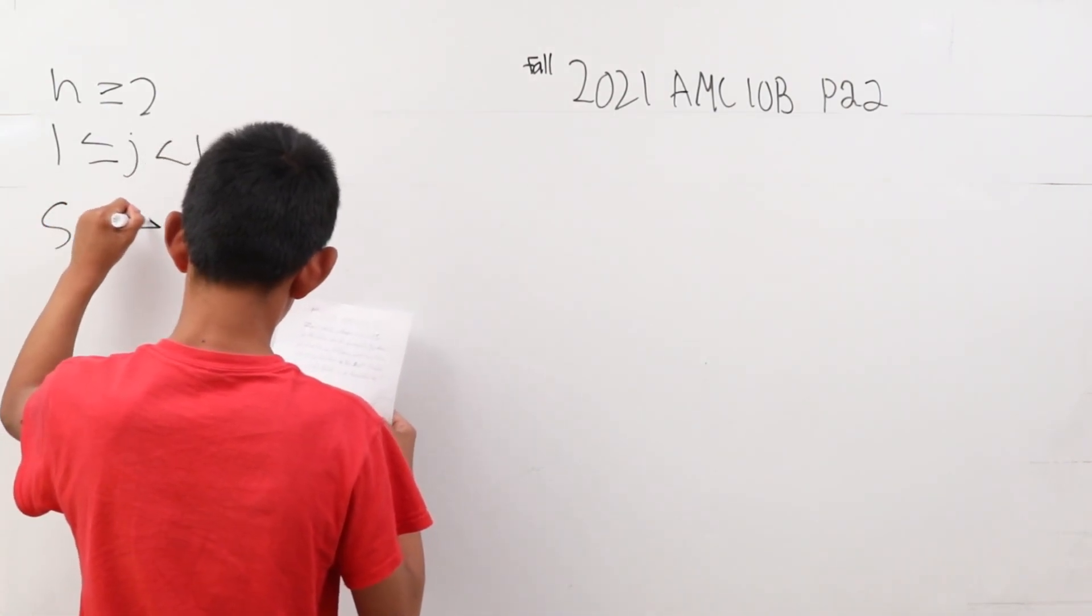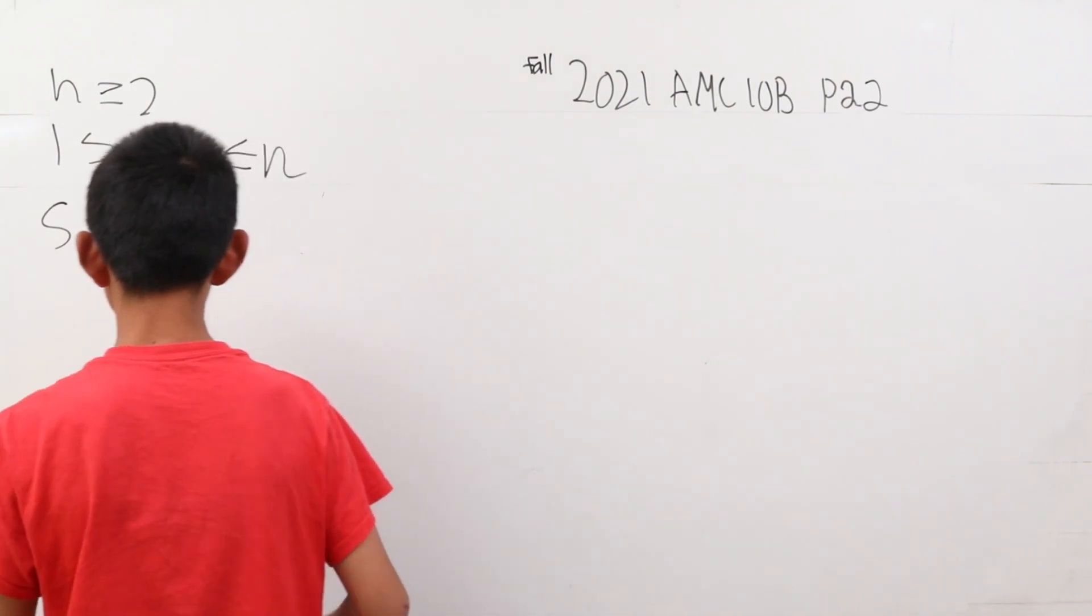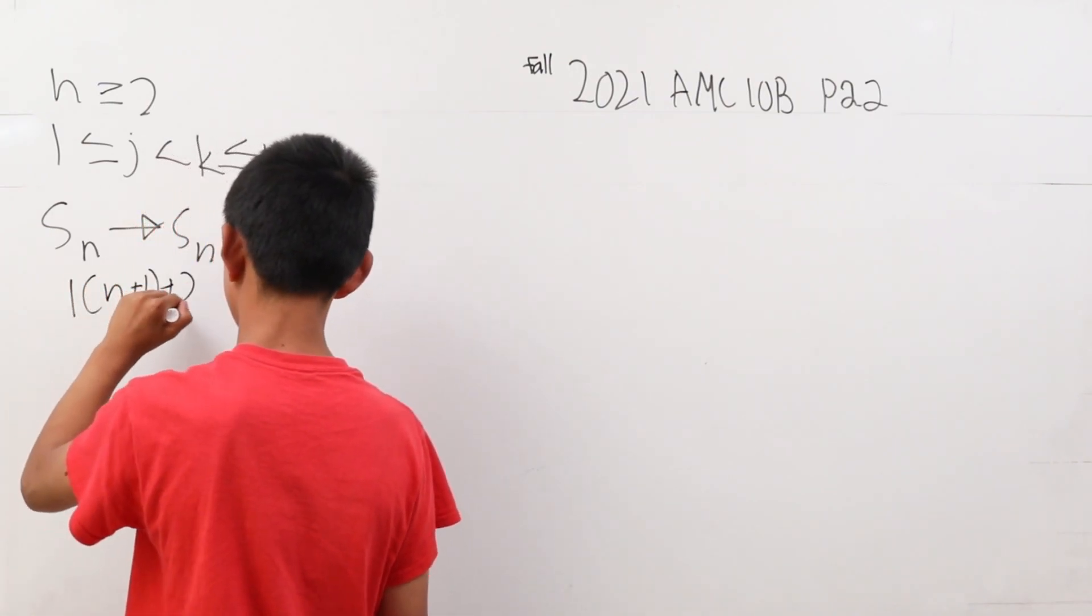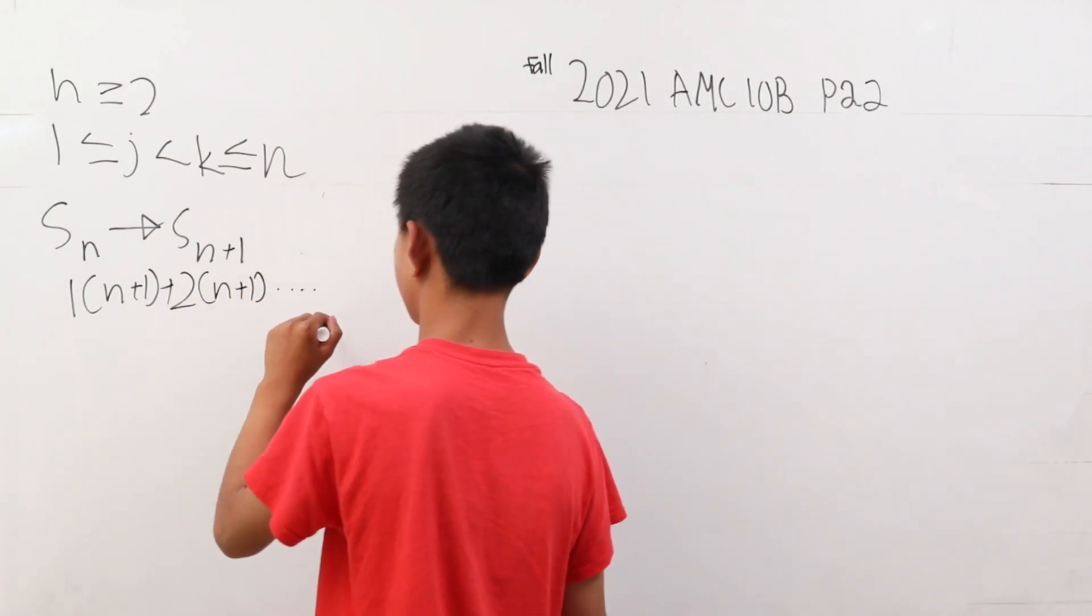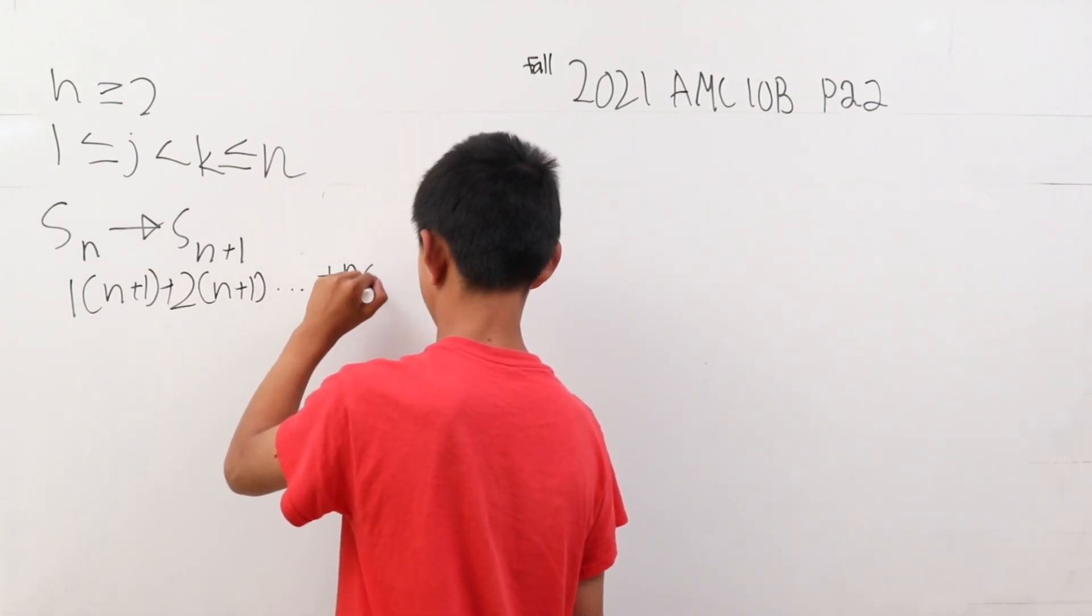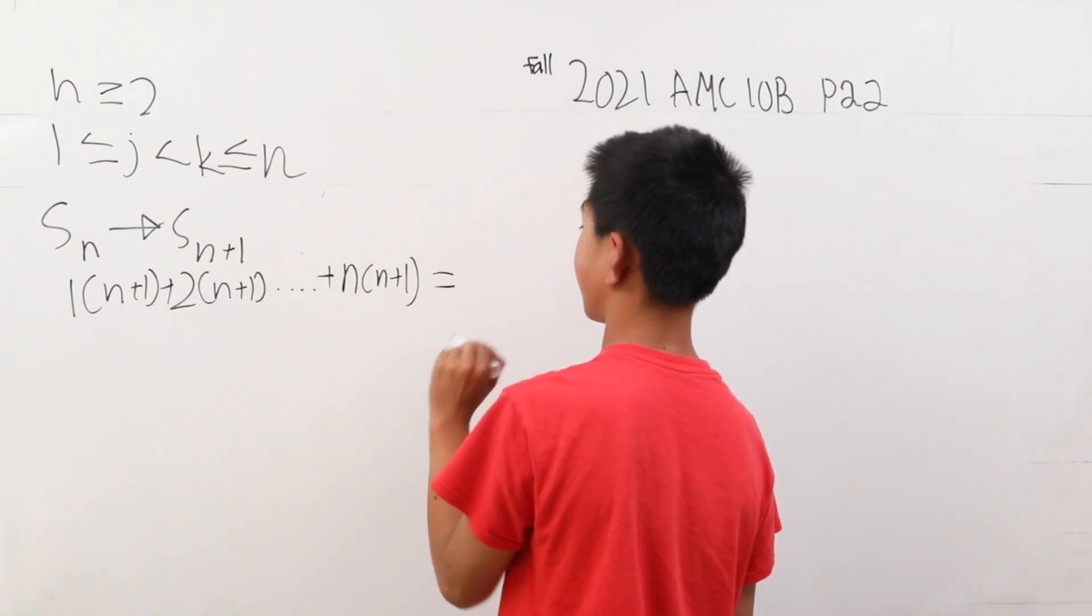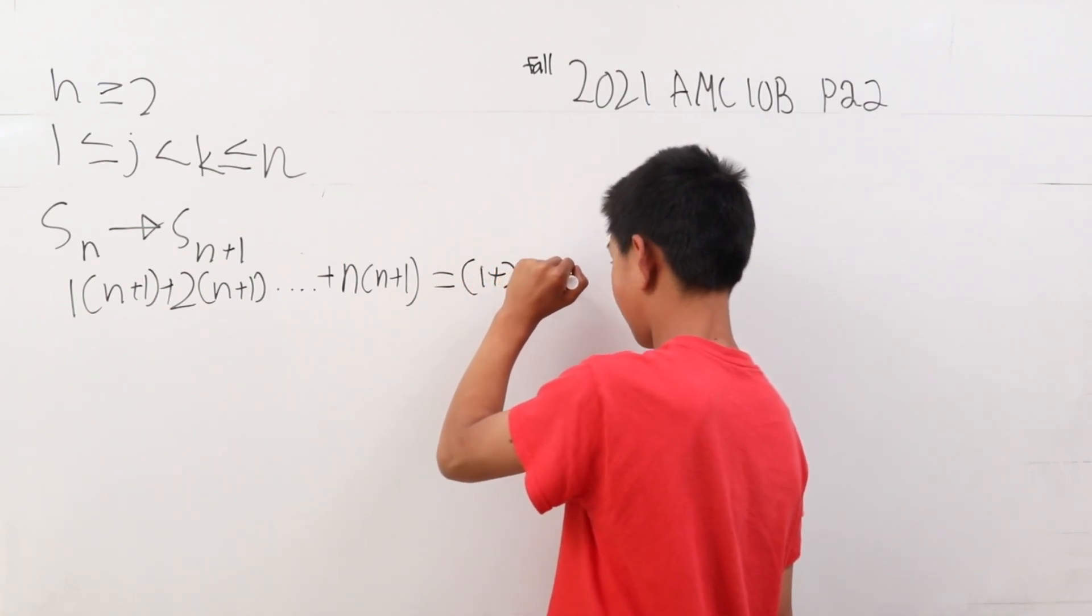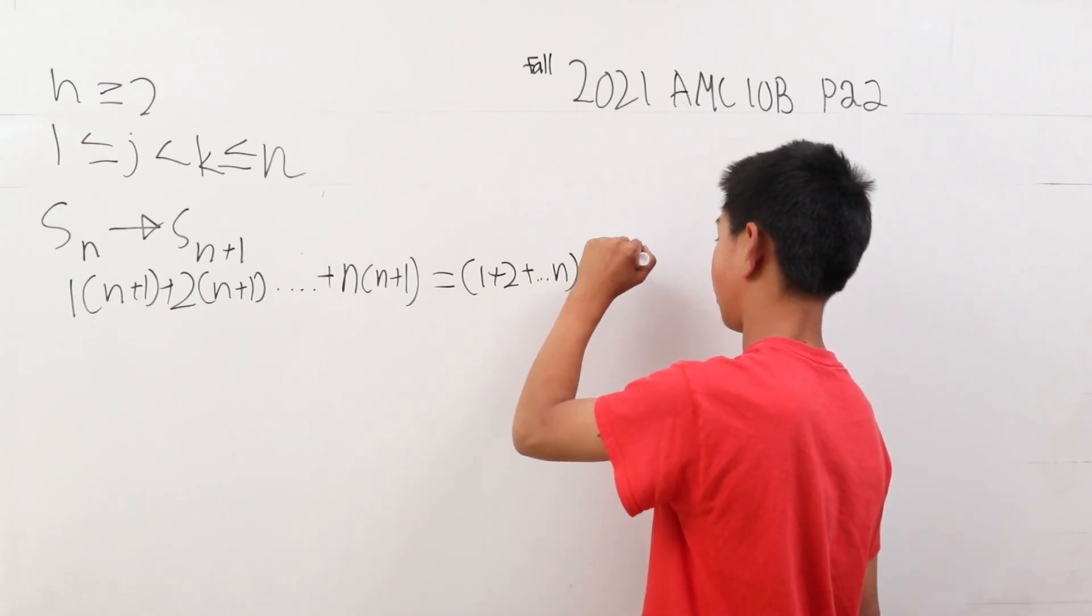When s of n approaches s of n plus 1, you use the equation 1 times n plus 1, plus 2 times n plus 1, all the way to when you add n times n plus 1. We can factor this by taking out the n plus 1. This becomes 1 plus 2 all the way to n, times n plus 1.